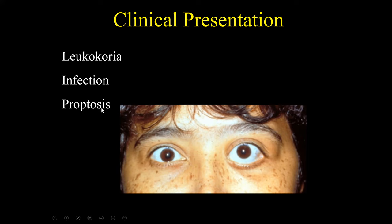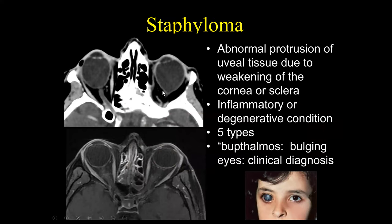The last thing we'll talk about is proptosis. When discussing proptosis, the first thing is an abnormal globe. A staphyloma is an abnormal protrusion of uveal tissue due to weakening of the cornea or the sclera — think of it as a very weak eye, typically due to inflammation or degenerative conditions. There are actually five types of staphylomas. Radiologically, we can make the diagnosis of staphyloma by looking for asymmetrical enlargement of the globe. Buphthalmos is a clinical diagnosis referred to as a cow's eye; we don't say buphthalmos on imaging, but we can say staphyloma — diagnosed by the enlarged globe due to weakening of the cornea or sclera.